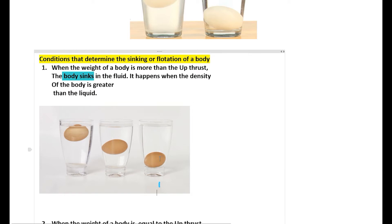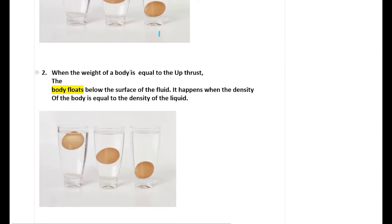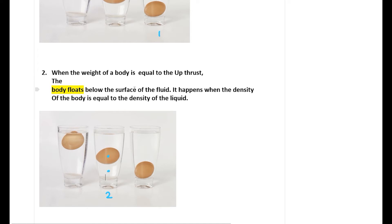In the first case, the egg is sinking because the density of the egg is more than the density of this liquid. Our second case is when the weight of the body is equal to the upthrust — the body floats below the surface of the fluid. This happens when the density of the body is equal to the density of the liquid.